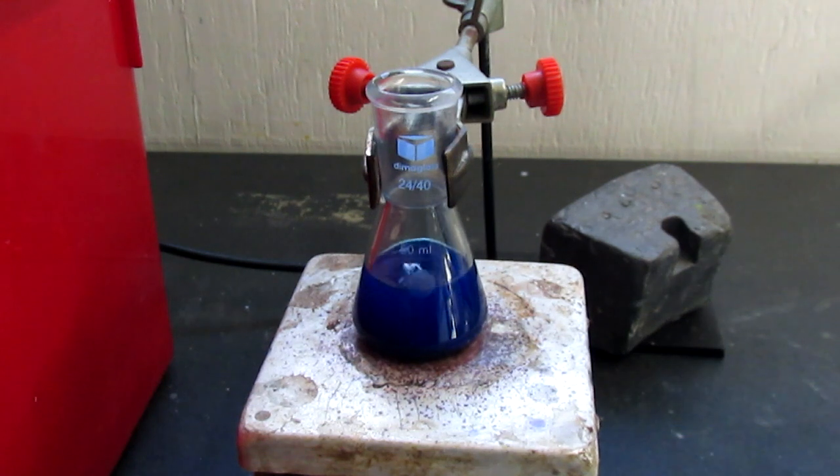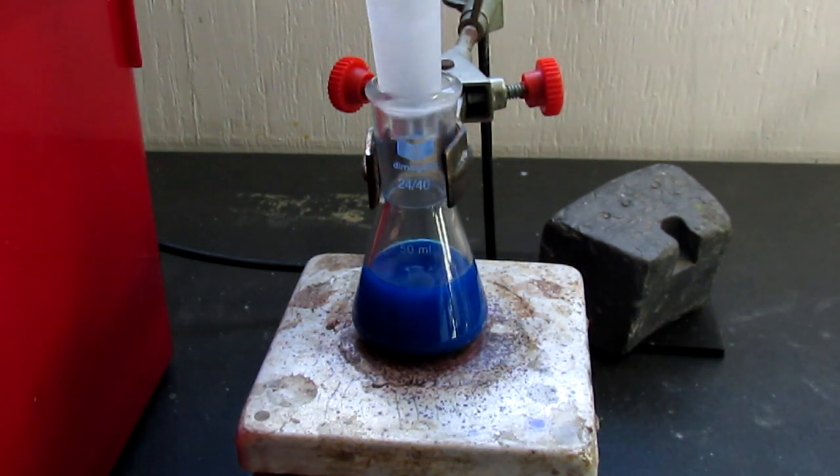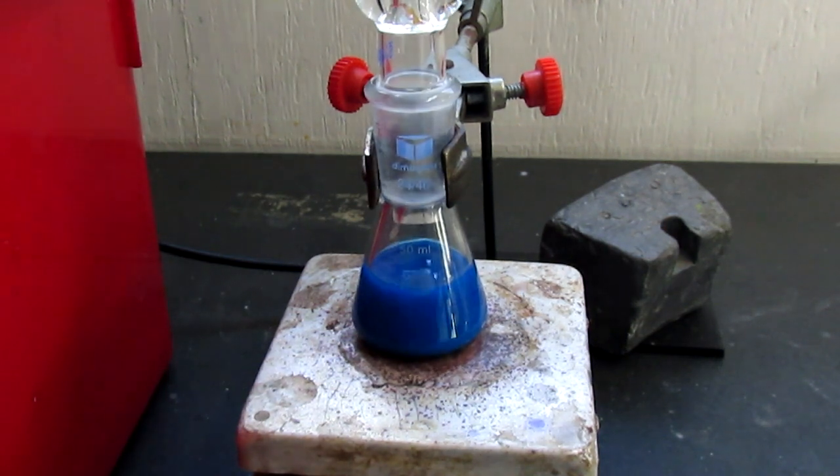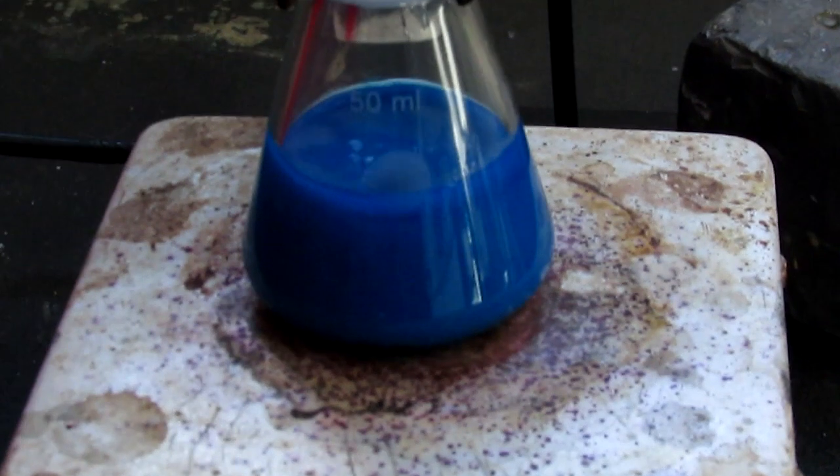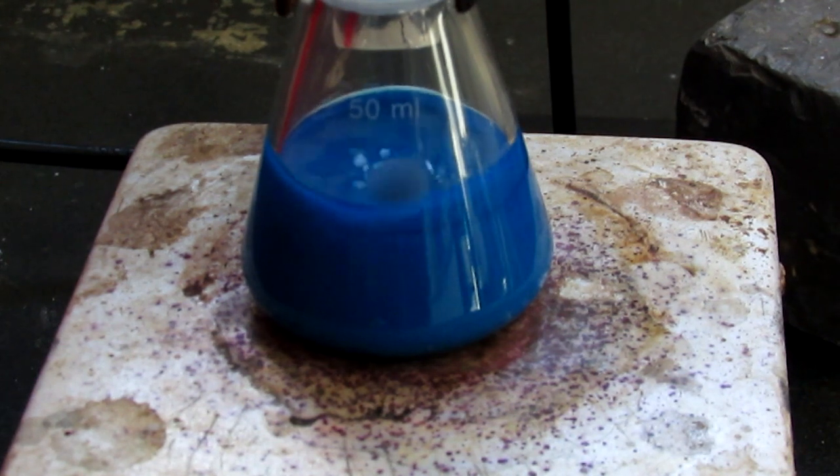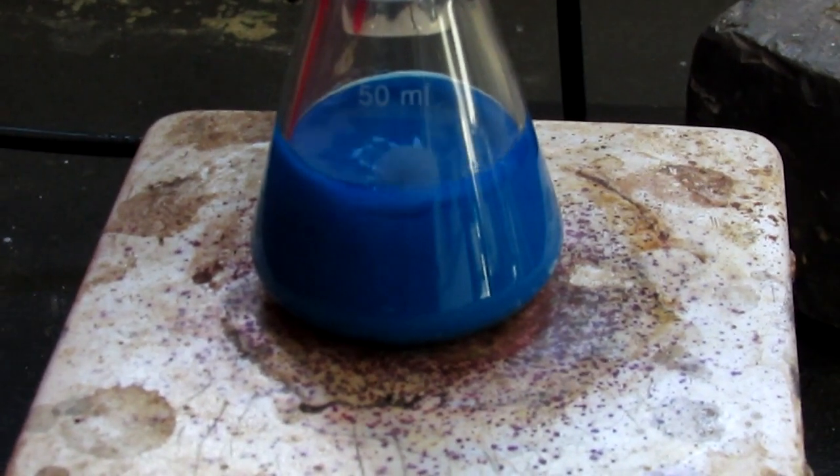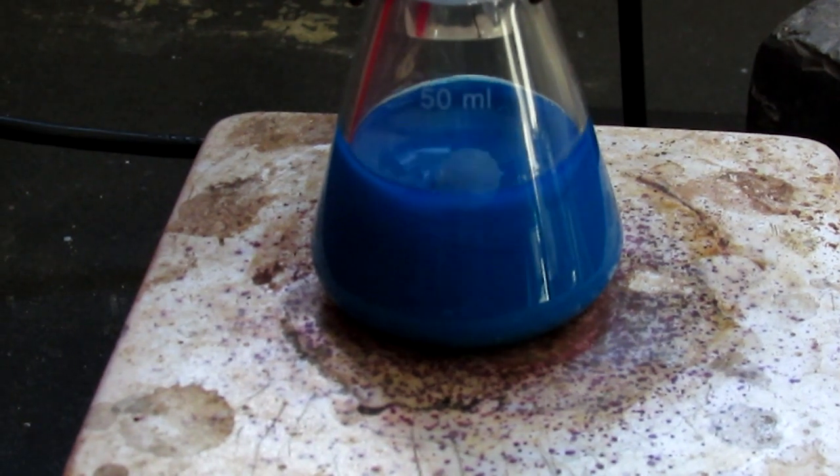Now we're going to stick the reflux condenser back on and continue refluxing for around 20 minutes. We may already be able to see some of the precipitate forming. Looks to be a nice blue color as expected.